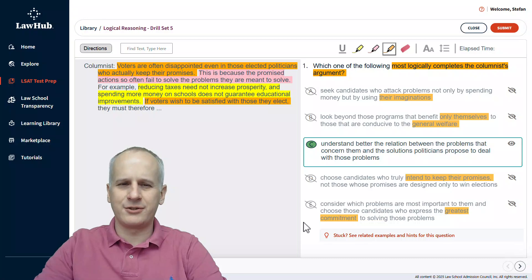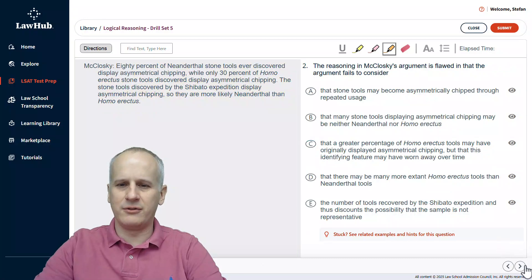Moving on from question one of logical reasoning drill set number five over at lawhub.lsac.org. We've got the highlight tool ready, and we're going to engage the question stem to start. It reads, the reasoning in McCloskey's argument is flawed in that the argument fails to consider.